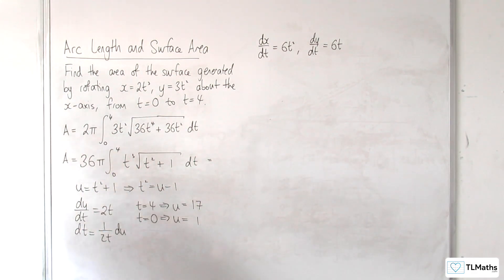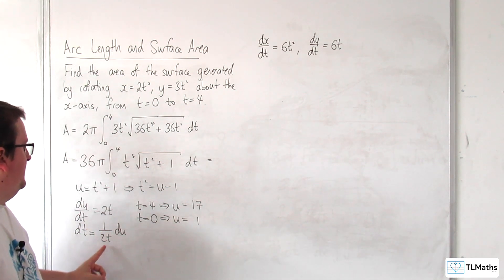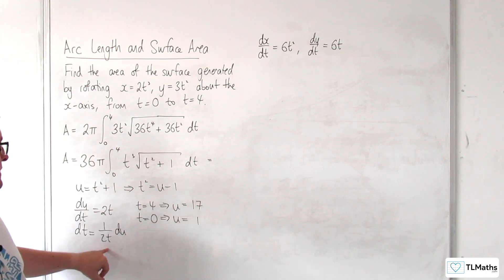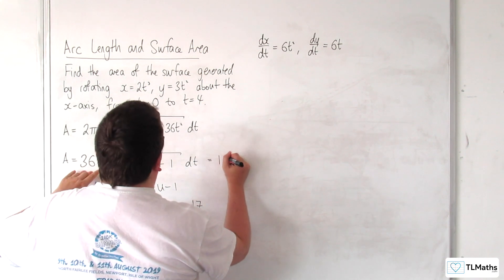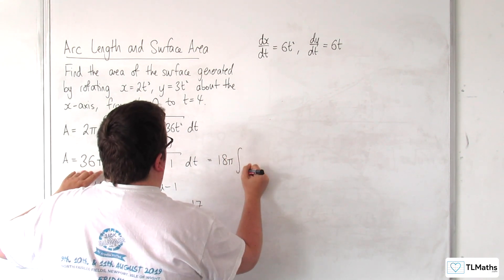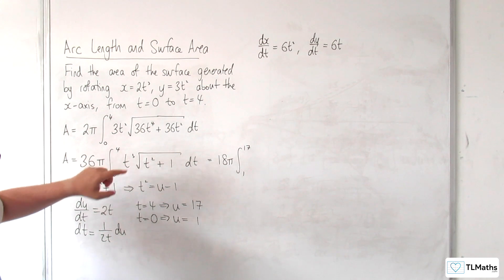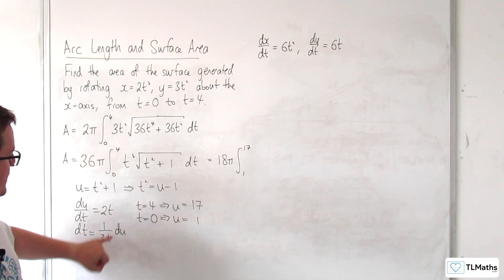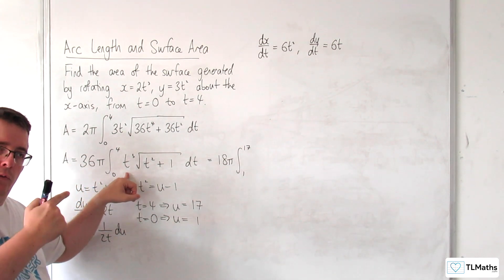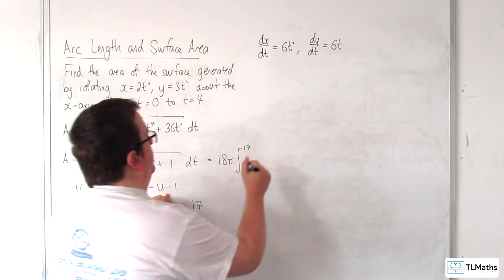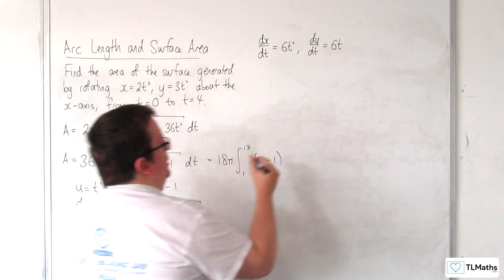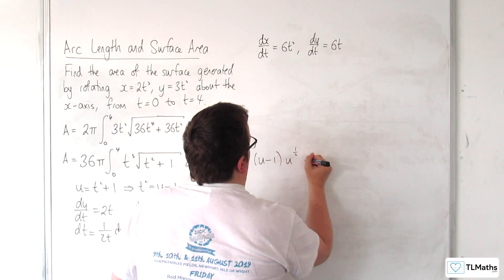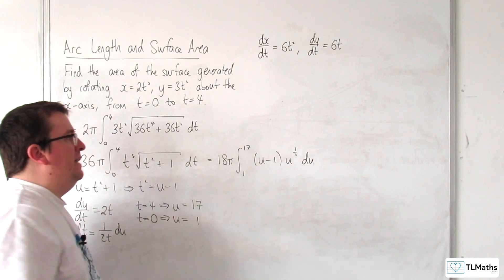So, I'm going to be replacing the dt with 1 over 2t du, so I've got a half coming out here, so I'm going to pull the half through, and I'm going to have 18π on the outside, integrated between 1 and 17. The t, 1 over t is going to knock out one of those, so we'll be left with t squared, which is the u minus 1. And the t squared plus 1 is u, so I've got the u to the half du, and so this is now my integral.